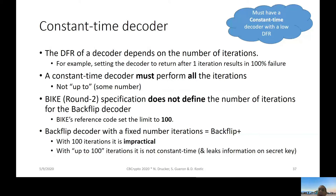We must have a constant time decoder with a low DFR because, at least for IND-CCA security, the DFR of a decoder depends on the number of iterations. If we want it to be implementable in constant time, it must perform all the iterations — there is no 'up to a certain number' approach. BackFlip did not specify this, but we are calling BackFlip-plus the decoder with a fixed number of iterations that is always performed — with 100 iterations it is impractical, not constant time, and leaks information.